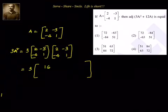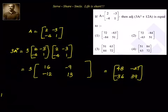Then A₁₂: 2 × (-3) = -6, -6 + (-3)(1) = -9. Then A₂₁: (-4)(2) = -8, -8 + (1)(-4) = -12. A₂₂: (-4)(-3) = 12, 12 + 1 = 13. So this is equal to 3 × [[16, -9], [-12, 13]] = [[48, -27], [-36, 39]]. So that is 3A².